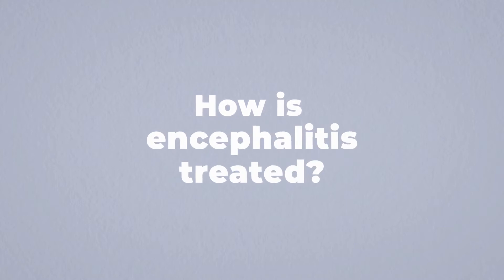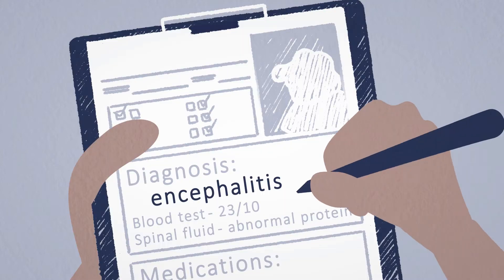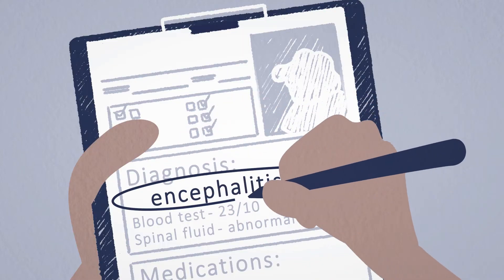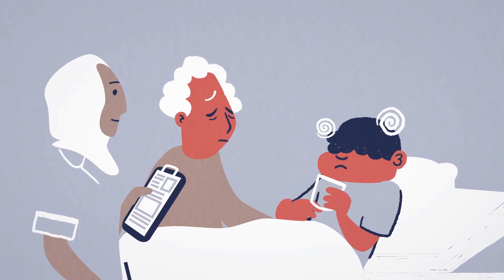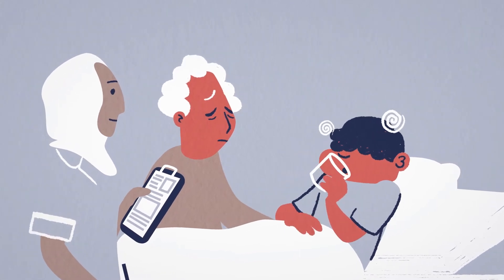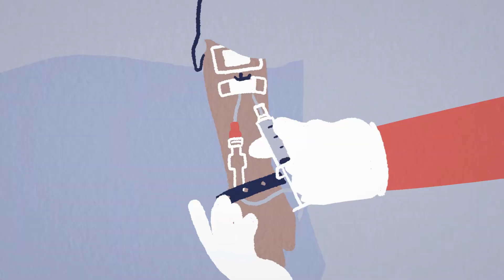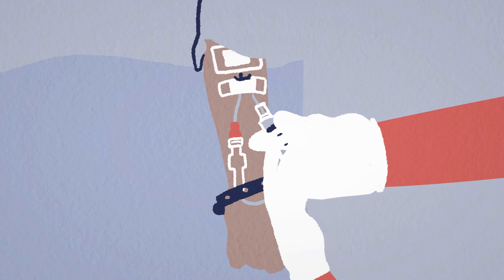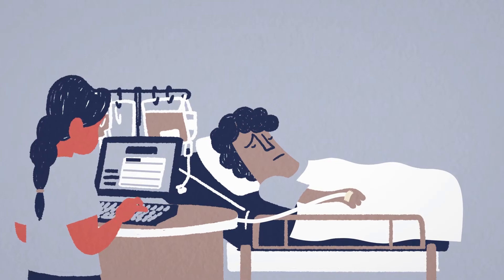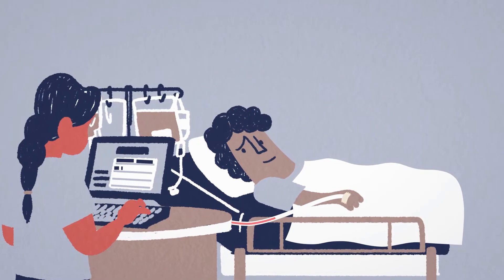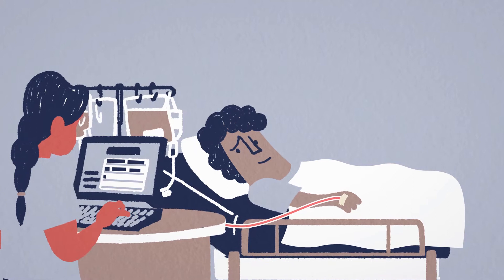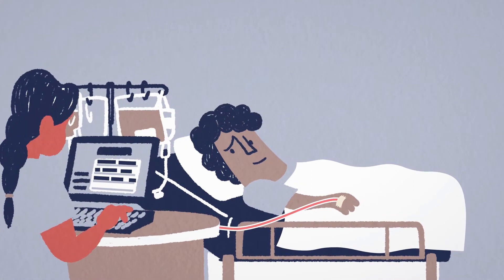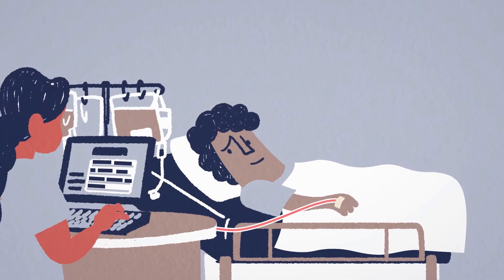How is encephalitis treated? Treatments for encephalitis are usually aimed at the cause of the inflammation. Antivirals are used for viral causes, antibiotics for bacterial causes, and for autoimmune causes, immunomodulatory drugs like steroids, intravenous immunoglobulin, or plasma exchange is used.